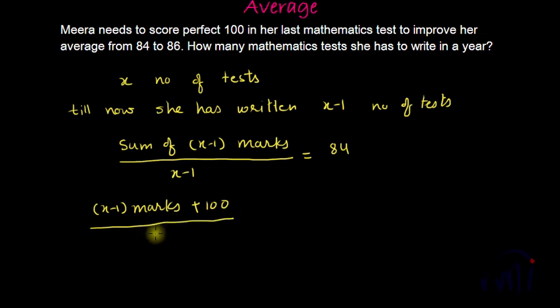total score will be sum of X minus 1 marks plus 100, the score in the last test, divided by X, the total number of tests. And here the average is 86.